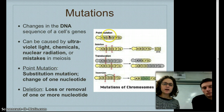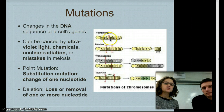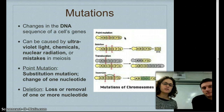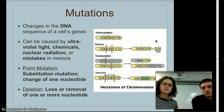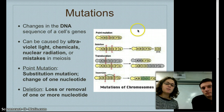A point mutation is where at least one nucleotide or nitrogen base is changed. You can see a lot of different versions we've already talked about in class, including deletions, insertions, and inversions. For this standard, it's not necessarily that you understand exactly how all of these are different, but that all of them can result in a change in genes.